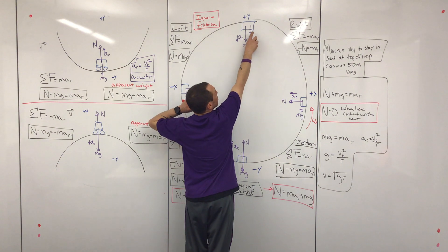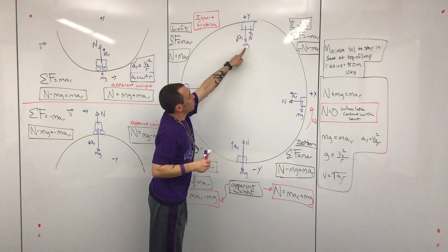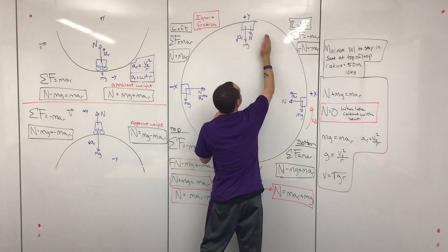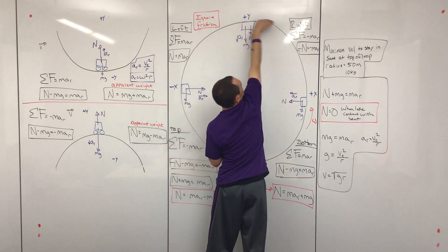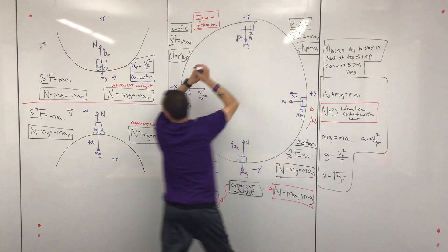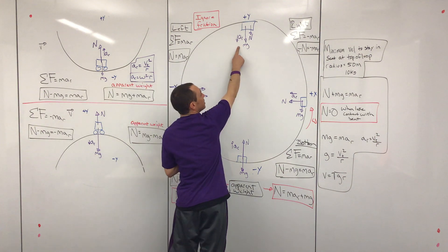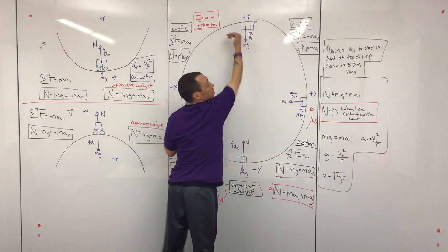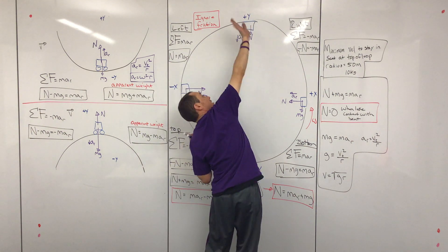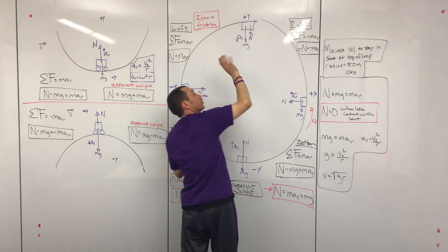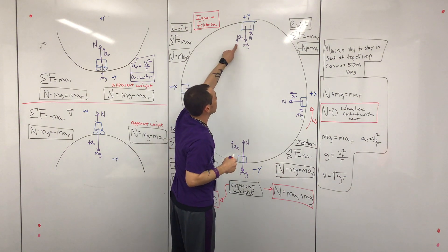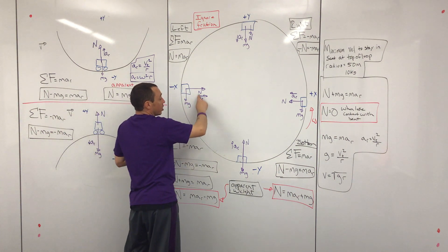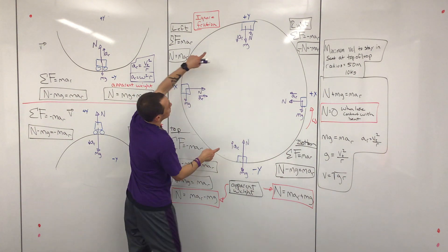At the top of the loop, weight is down and normal force is also down — they're both in the same direction toward the center of the circle, so radial acceleration is also down. Be careful: this is describing moving inside the loop at the top. If we were on top of the loop driving over it, that would be the hump situation. This is describing being inside the loop — pressing up against the track — so normal force is down, weight is down, and radial acceleration is also down toward the center of motion.